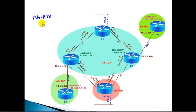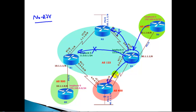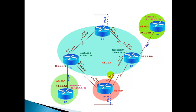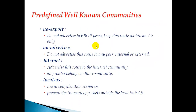When using no advertise, you may come across a scenario where you are advertising some prefix to another autonomous system and want to ensure this advertisement should not get advertised to any internal BGP neighbors and also not to any external BGP neighbors. In that case, simply say no advertise. It will not be advertised to any internal neighbors, and also not to any external neighbors. It's an easy way of tagging and filtering BGP updates - you can use ACLs or prefix lists to filter routes, but BGP communities with these predefined well-known attributes are another effective approach.